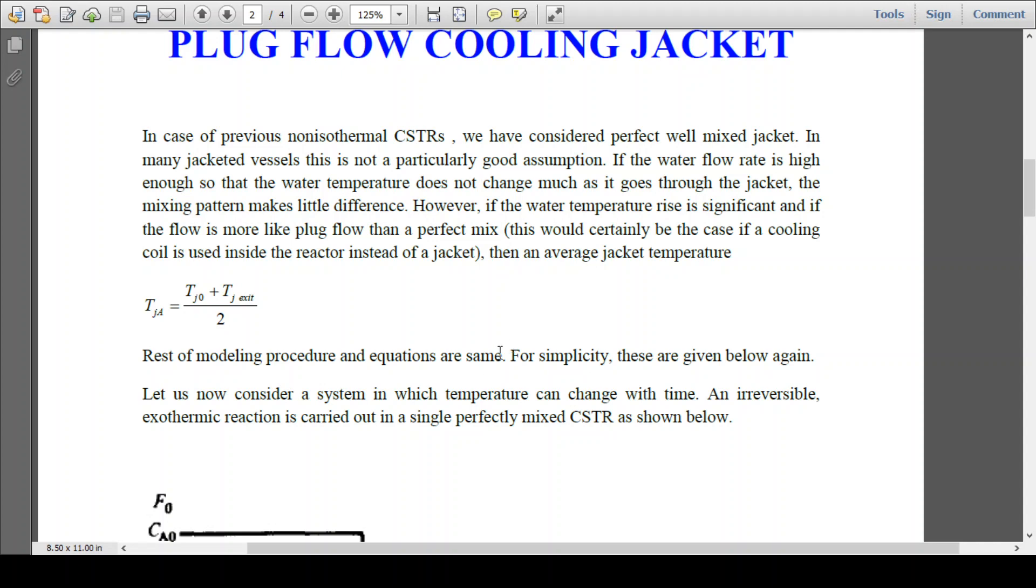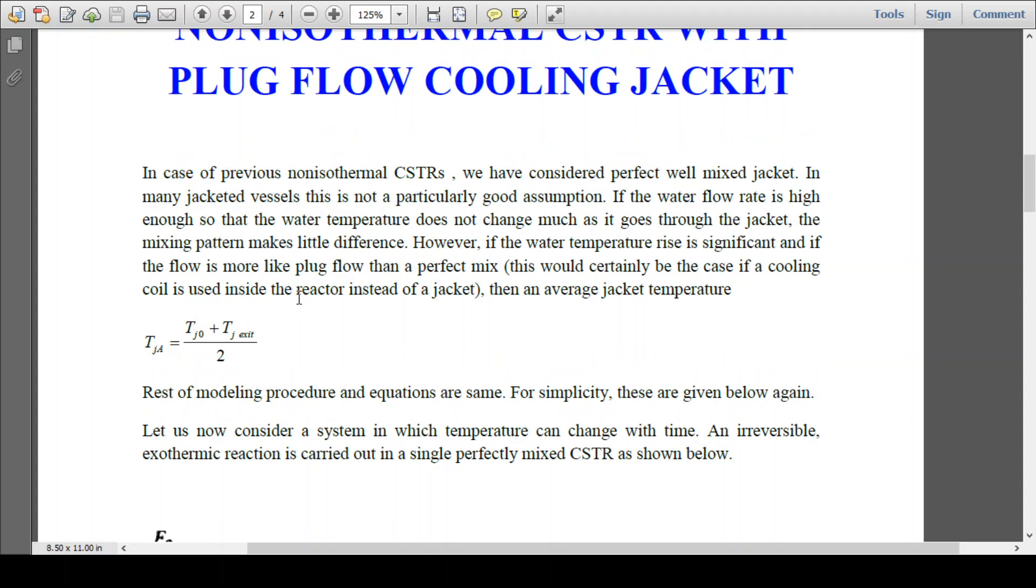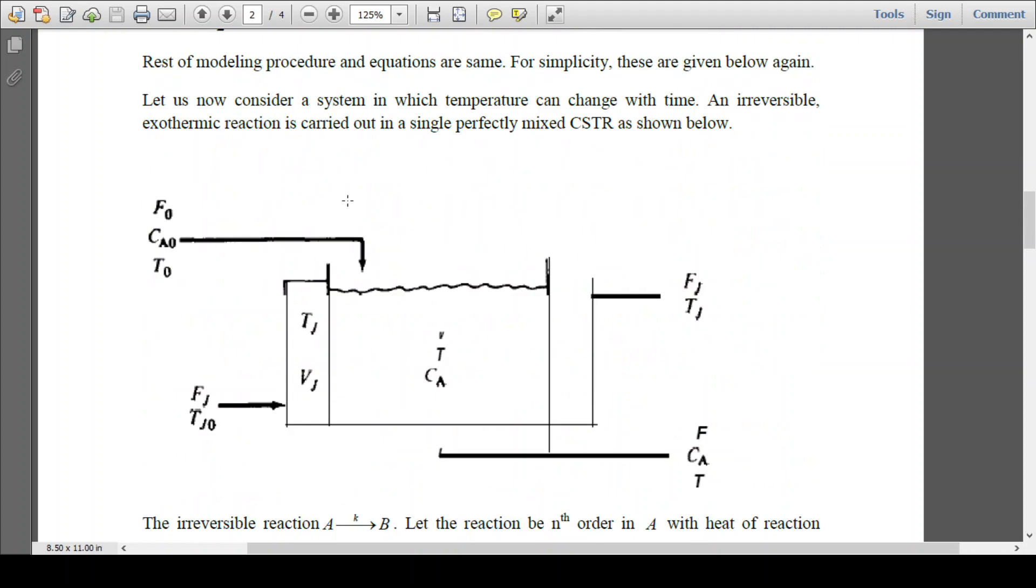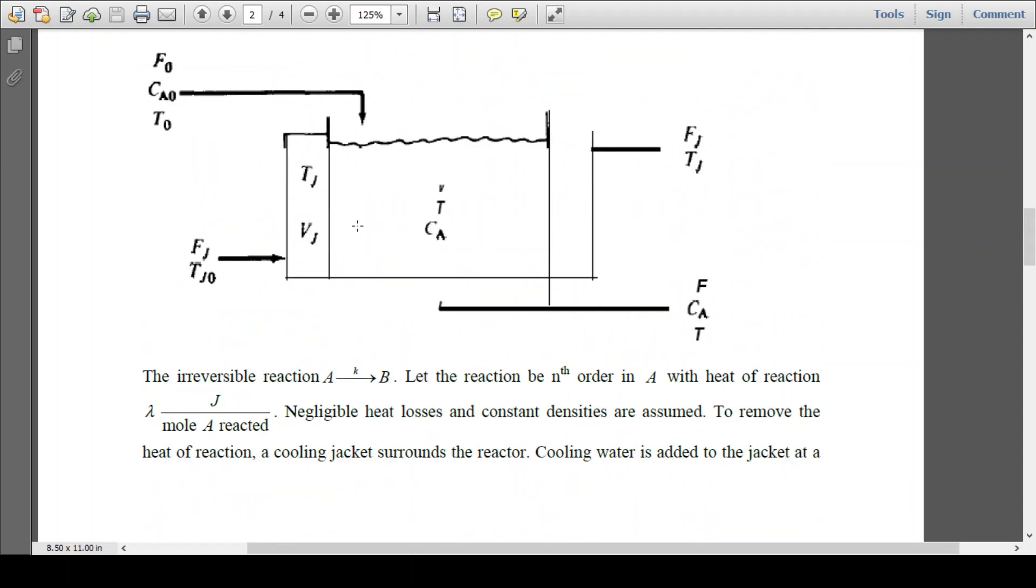The temperature rise is significant inside the jacket. Perfect mixed flow cannot be considered. So in that case we are calculating the jacket average temperature inside the jackets: Tj zero plus Tj exit divided by two. This is just an averaging consideration here. Rest of the equations are same as was the case in the case of the non-isothermal CSTR with mixed flow jacket.